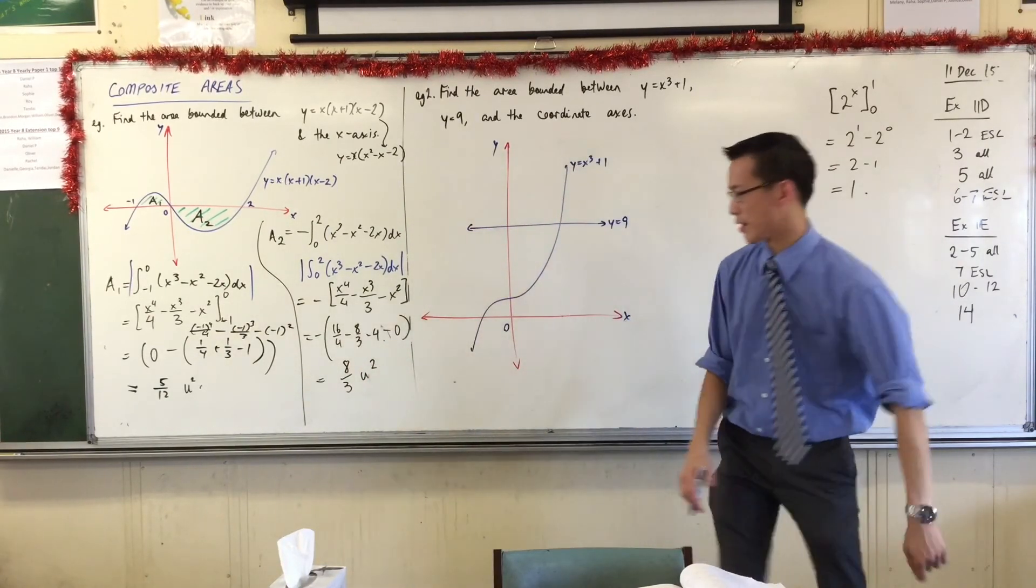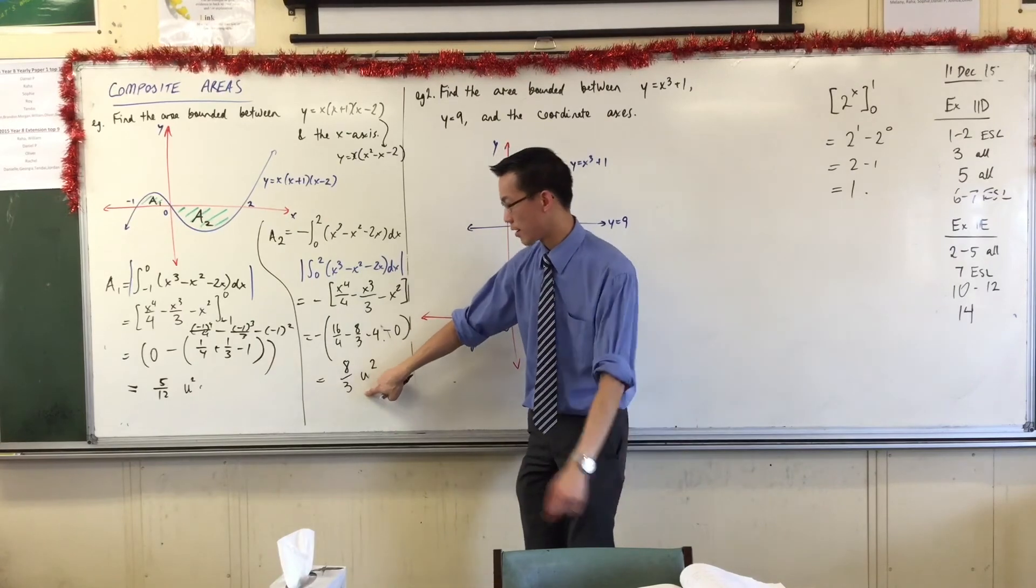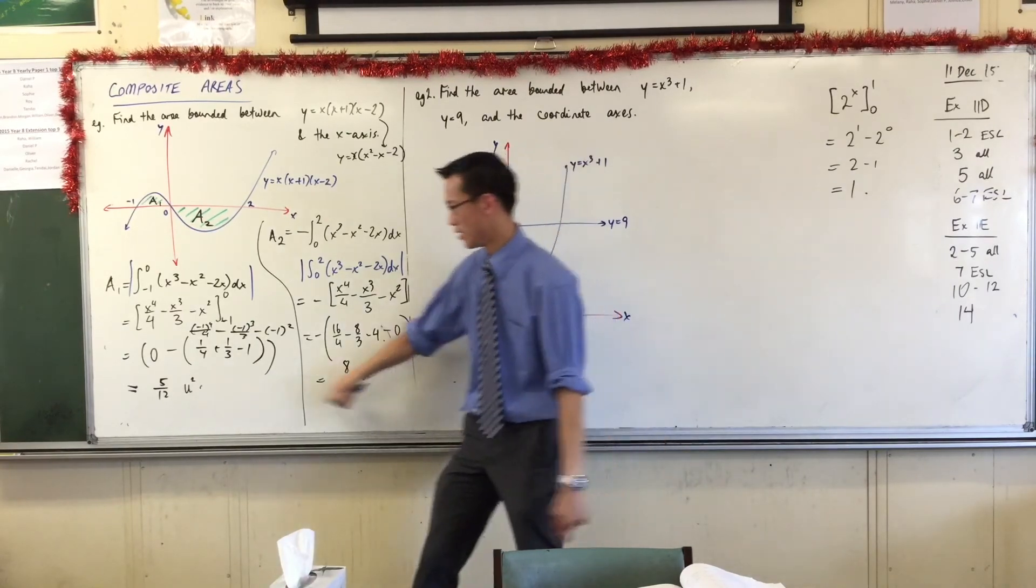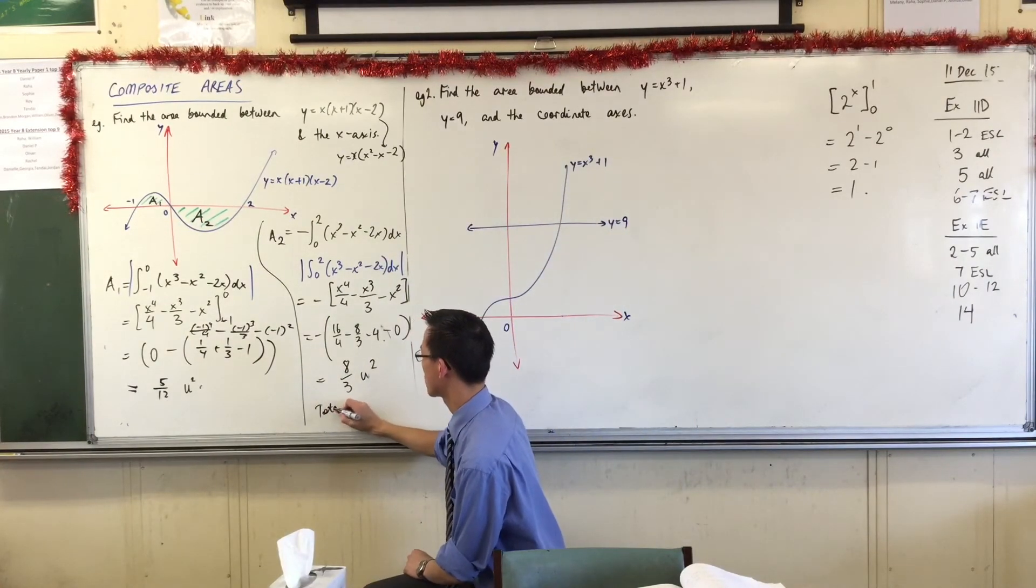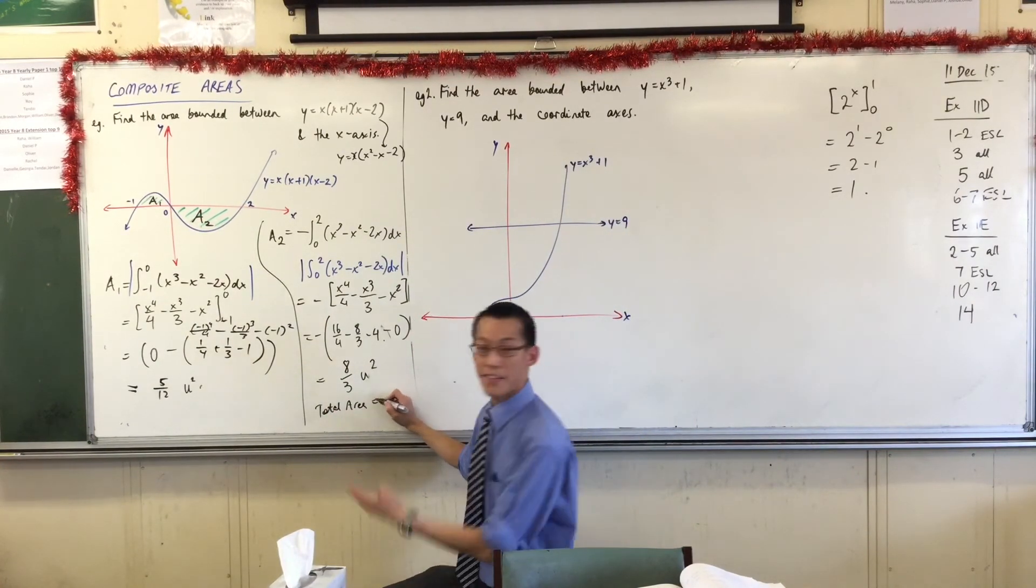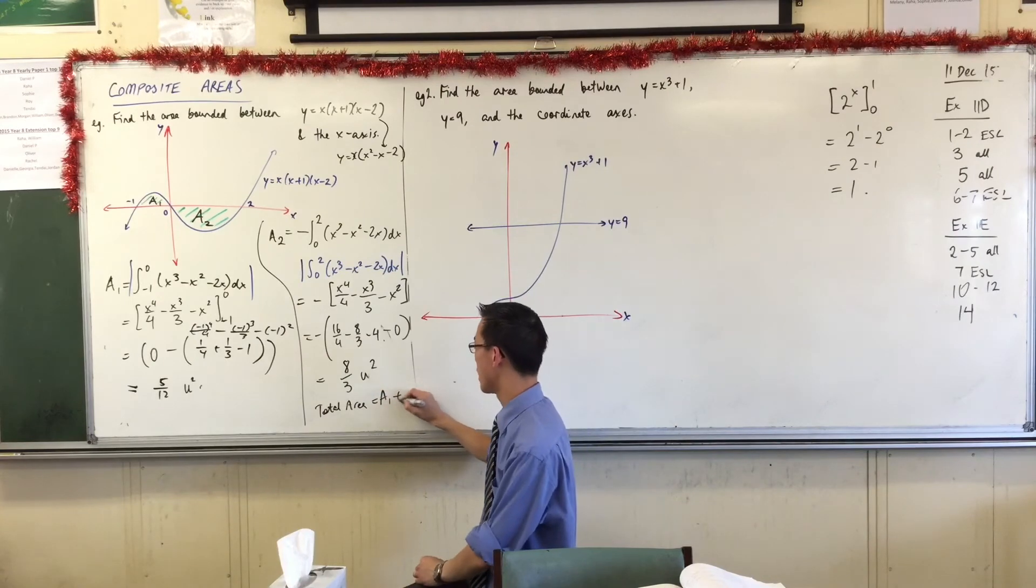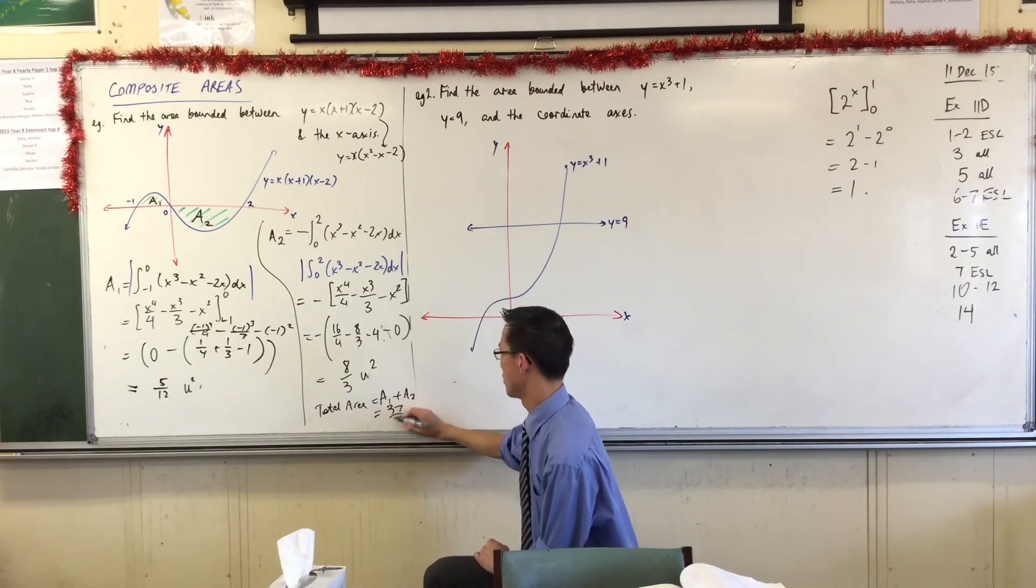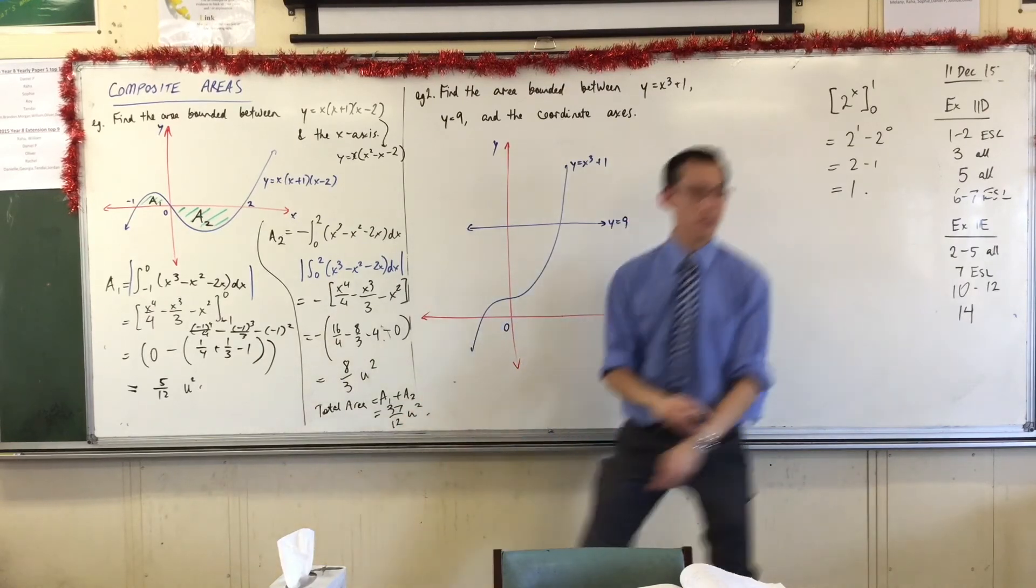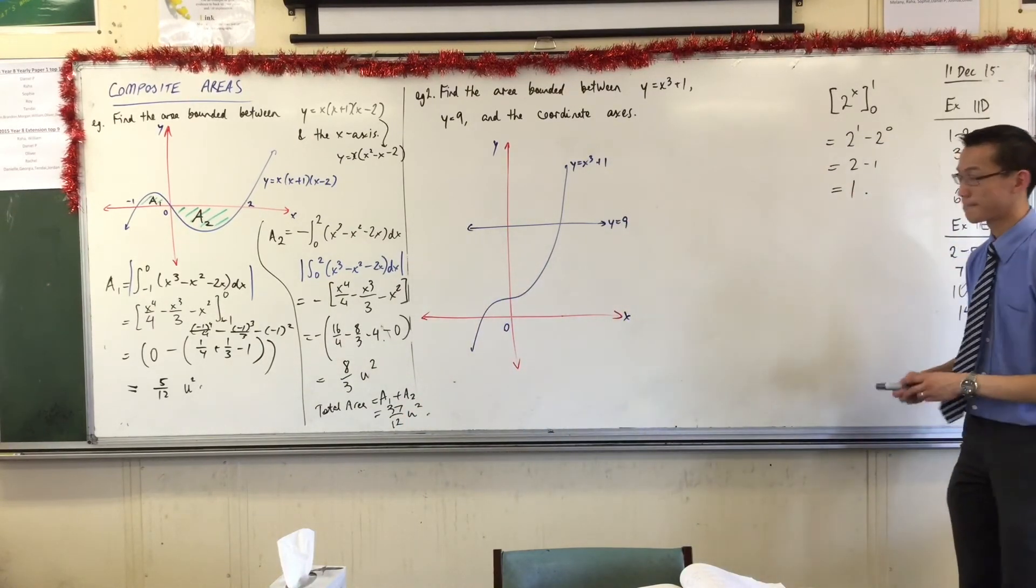And of course, you can add those together. That's going to be 32 over 12. So 37 over 12 as a total area. So that would be my conclusion. I would say total area, and then I put my pieces together so it's clear how I'm doing this. That's the number of units squared. Are you happy with that?